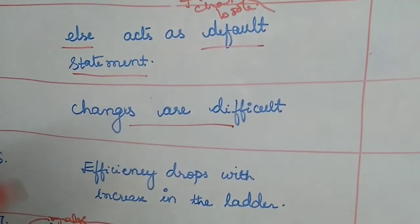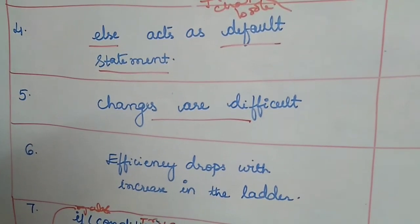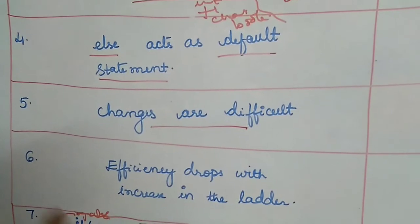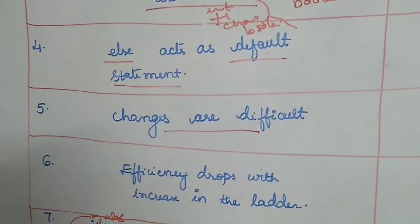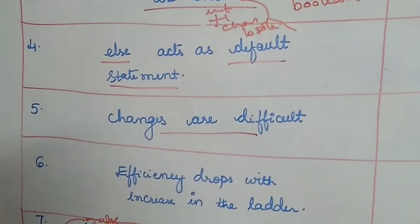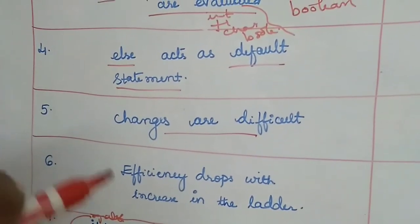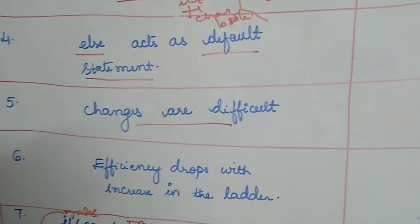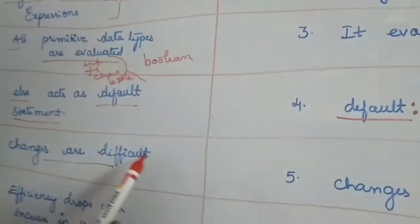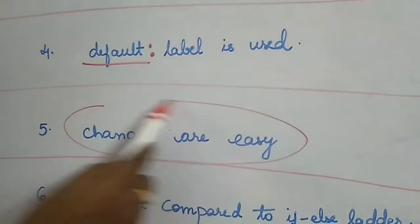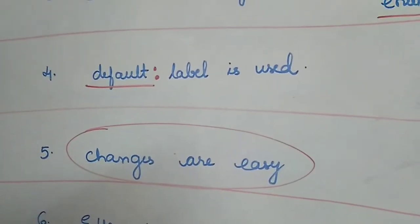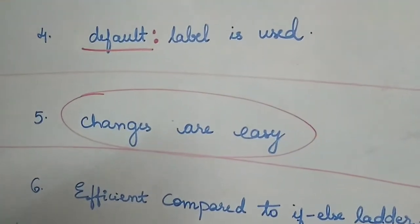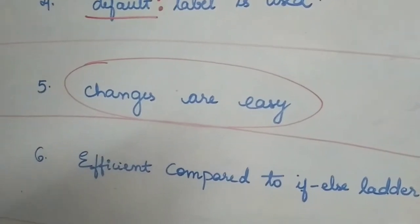Next: changes are very difficult to make in a large chain of else-if. Making changes to one else-if condition may affect the previous or the next else-if, because the expression includes many data types and both logical and equality operators. The readability of the code is also very low when using if-else statements. In contrast, changes are very easy to make in switch cases because the syntax is simple, and the compatibility of the expression with the values makes it straightforward.